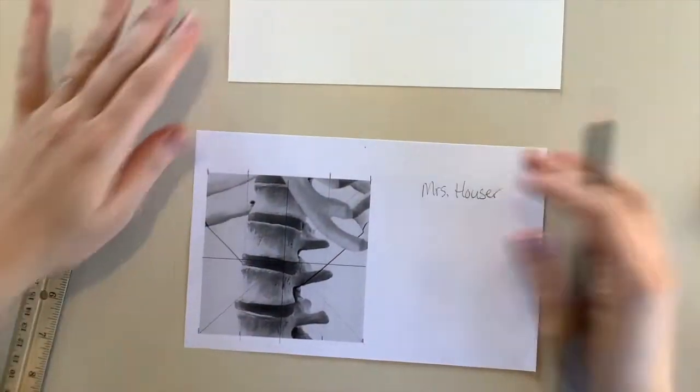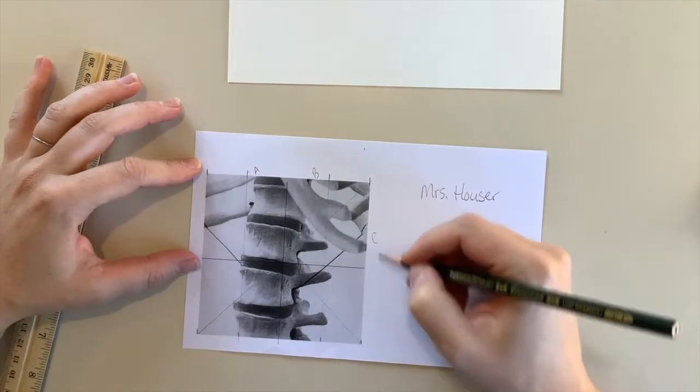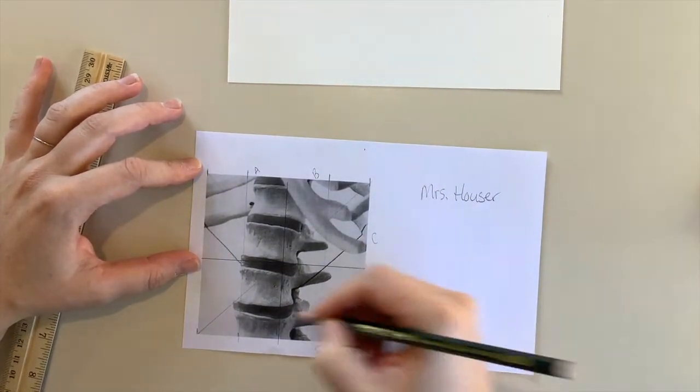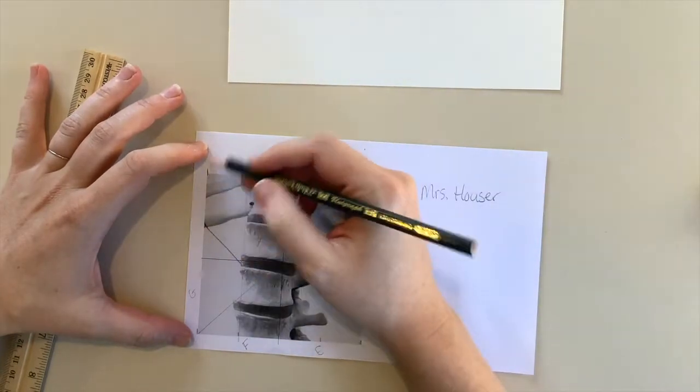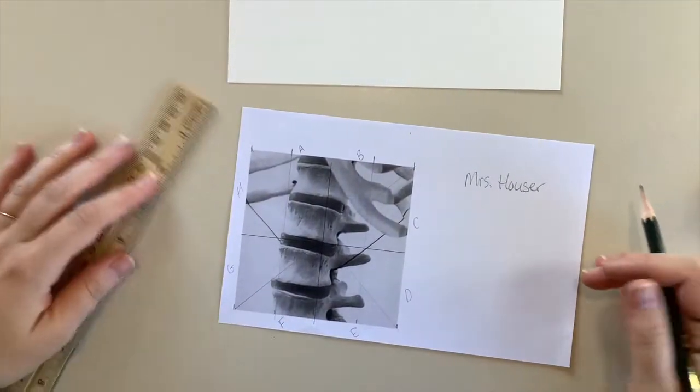Then it'll be broken up into more of an A, B, C, D, E, F, G, and H sections. It just looks a little bit different than your common traditional grid.